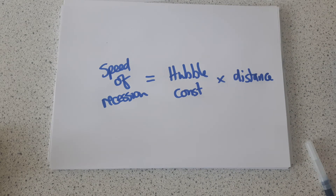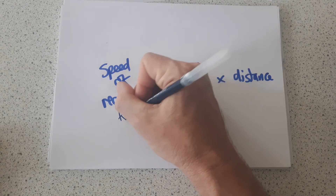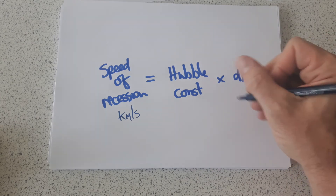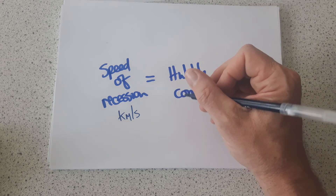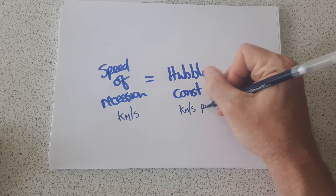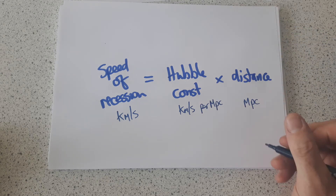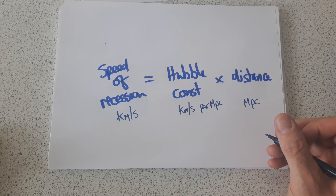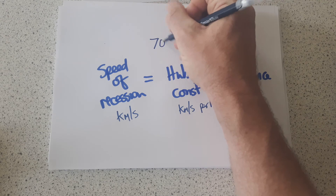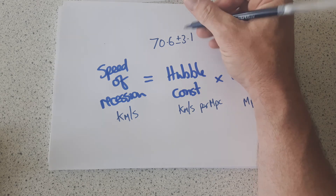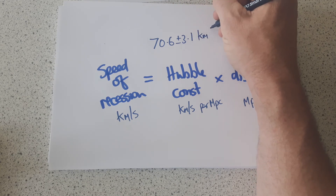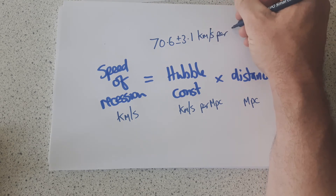The units we use are: speed of recession in kilometres per second, and megaparsecs — that's millions of parsecs — for the distance. The Hubble constant itself is therefore in kilometres per second per megaparsec. The value of the Hubble constant has changed over the years; by 2010 we had the value of 70.6 plus or minus 3.1 kilometres per second per megaparsec.